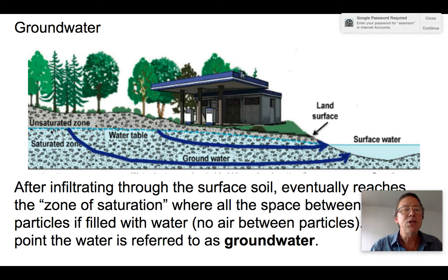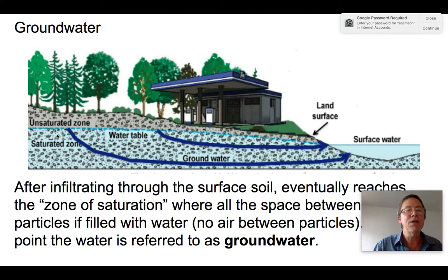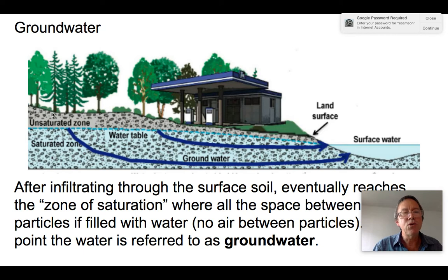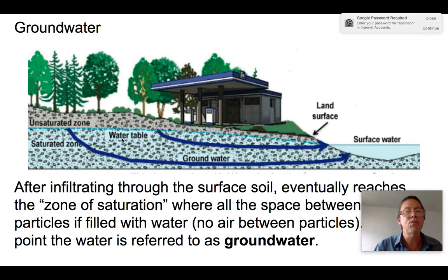The zone of saturation is what we call groundwater — where the pores are completely filled with water. The boundary between the unsaturated zone where infiltration is occurring and the saturated zone where water is moving horizontally is called the water table. That's the boundary between totally saturated sediment and the unsaturated part above.